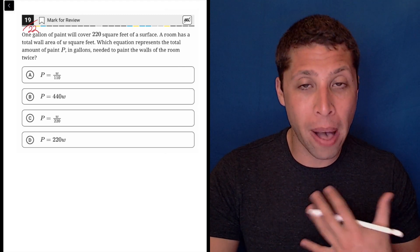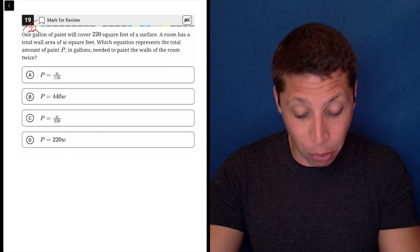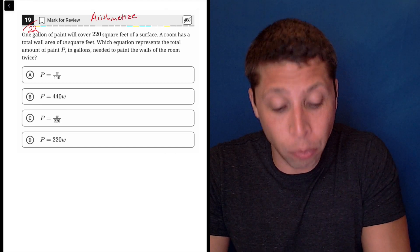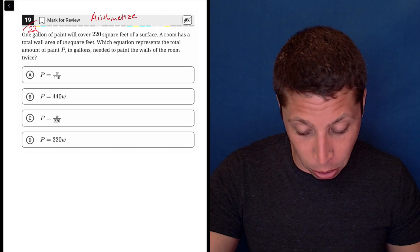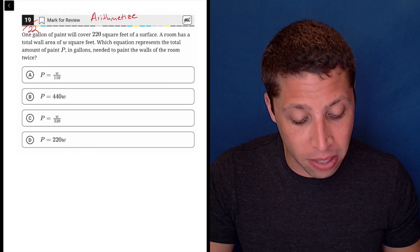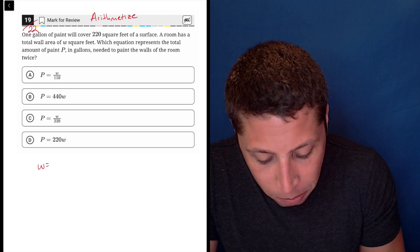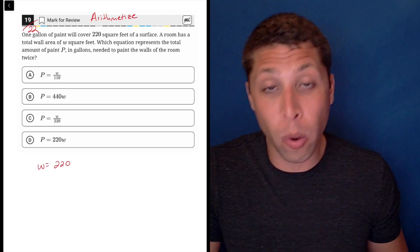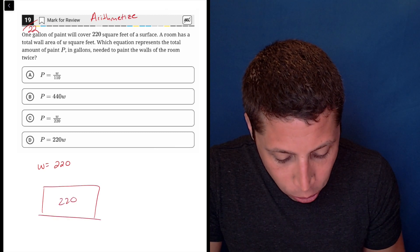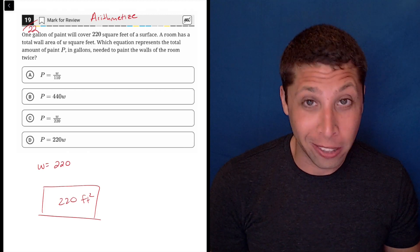It's telling you about painting a room. Come up with a room that makes sense for you to paint using these rules. We're going to arithmetize by making up a room. So one gallon of paint will cover 220 square feet of a surface. A room has a total wall area of W square feet. Why don't we just make W 220? So it's a room that has 220 feet squared of space. This is my wall in my room.